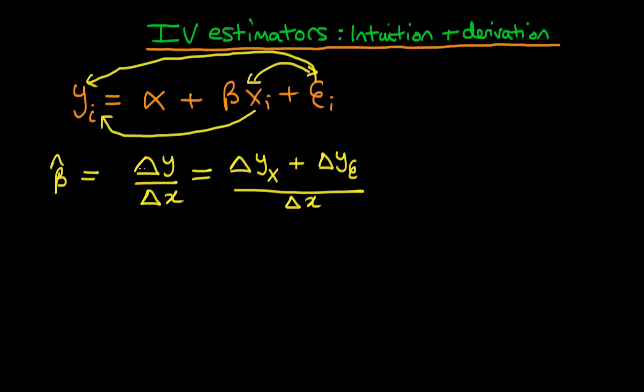And just in case you don't know, the delta just means change in that particular quantity. So the first term which we get here is the change in y due to the change in x. And then we've got the second term here which is the change in y due to the error divided by the change in x.